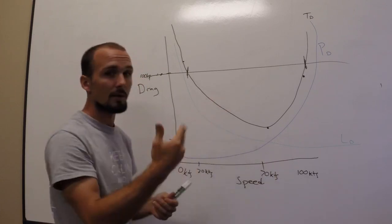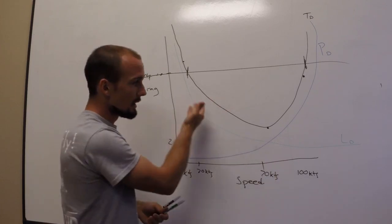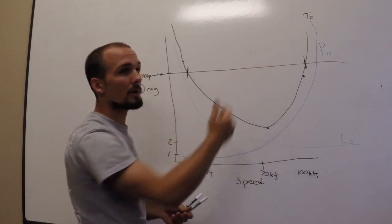In stalls, we push forward to recover the airplane, lower the angle of attack, lessen the drag, build up airspeed, and then climb away from the ground.